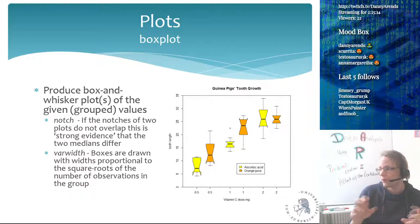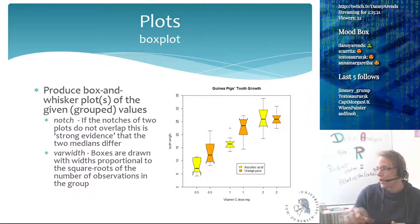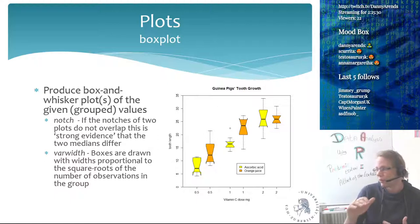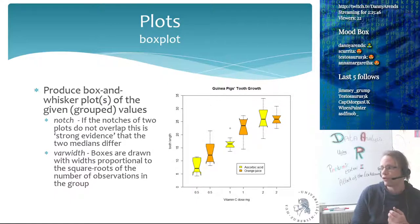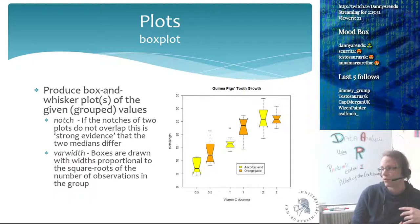I don't like the heatmap function at all — it messes with the margins and isn't flexible. I always try to use the image function. The only saving grace of the heatmap function is that it provides automatic built-in clustering, but you can cluster your data yourself using any clustering function and then just reorder it.